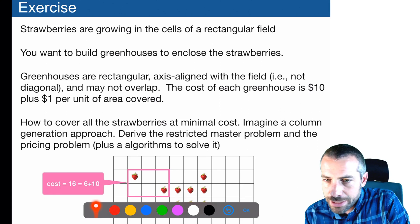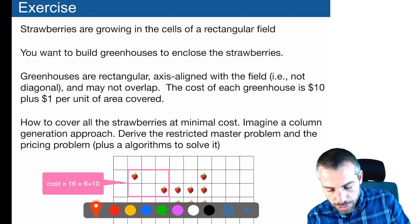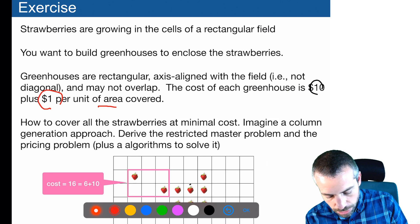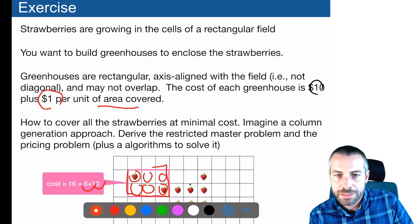During the practical session, you will apply column generation to solve the strawberry problem. That problem involves using greenhouses to enclose strawberries planted on a grid. You need to pay a fixed cost for each greenhouse used, plus a cost of one unit per area covered. For instance, one greenhouse might have a fixed cost of 10 plus 6 because it covers six units of area. The goal is to cover all the strawberries using a minimal amount of money.